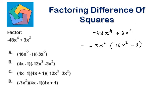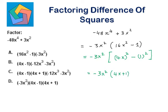Now let's write 16x squared minus 1 in the form of x squared minus a squared. This is equal to minus 3x squared times 16x squared. 16x squared can be written as 4x whole squared, and 1 can be written as 1 squared. So this is minus 3x squared times 4x plus 1 times 4x minus 1. That is the answer in part d, which we can highlight.